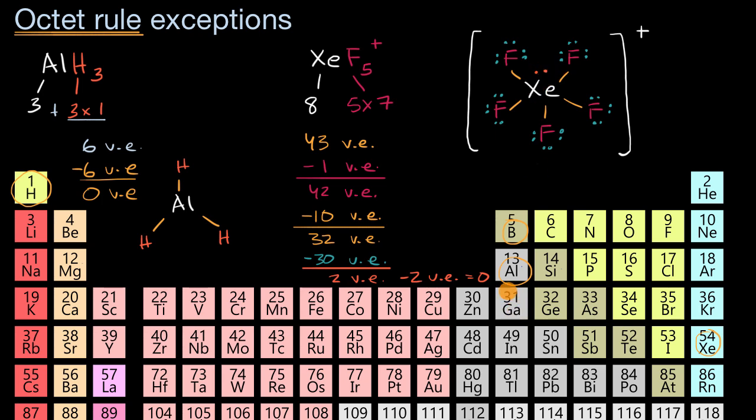Now, an interesting question is how do these atoms that are in the third period or beyond handle more than eight valence electrons? And it is a matter of debate, but some chemists believe that it's possible because they're able to place their electrons in their empty valence d orbitals. But once again, this is controversial in the chemistry community.